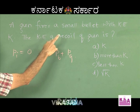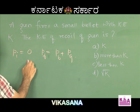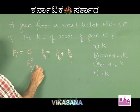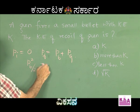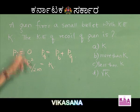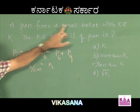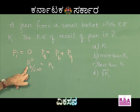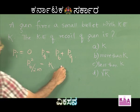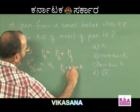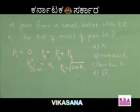We know the relationship between momentum and kinetic energy: P_b² divided by 2m equals kinetic energy k. The bullet was fired with kinetic energy k, so we find the momentum of the bullet from this formula, and you get P_b equal to √(2mk), which gives you the momentum of the bullet.